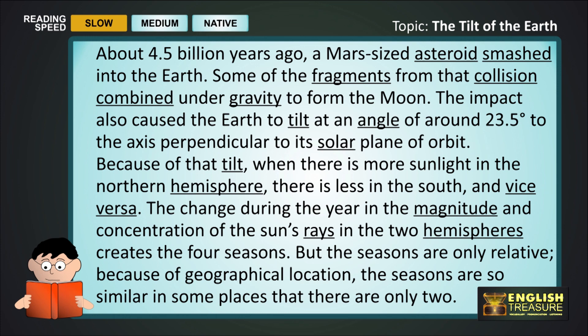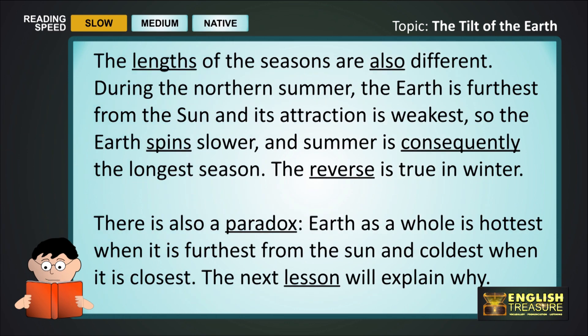But the seasons are only relative. Because of geographical location, the seasons are so similar in some places that there are only two. The lengths of the seasons are also different. During the northern summer, the earth is furthest from the sun, and its attraction is weakest, so the earth spins slower. And summer is consequently the longest season.